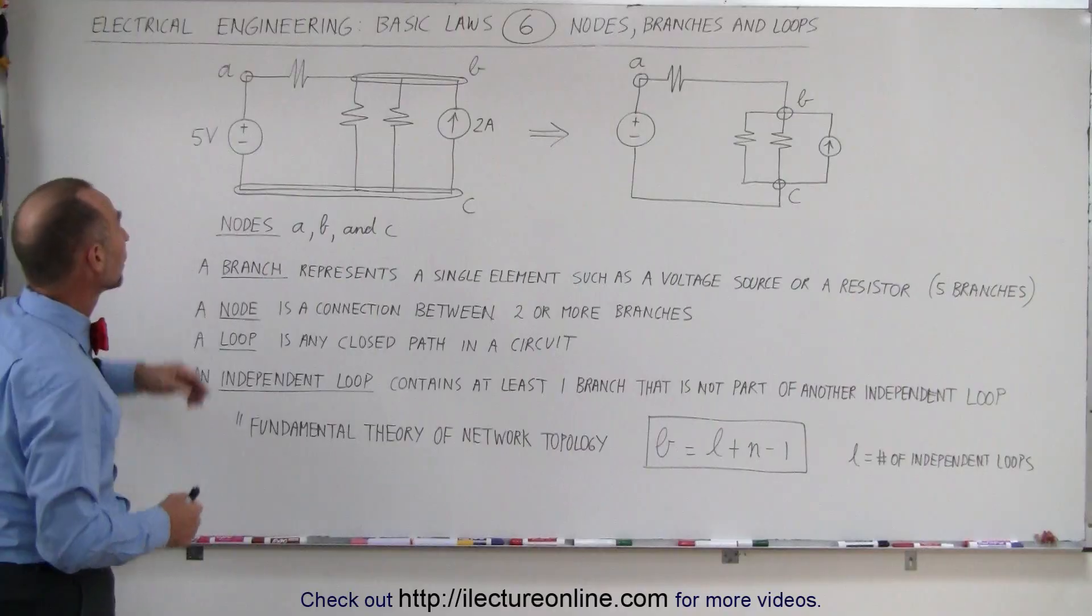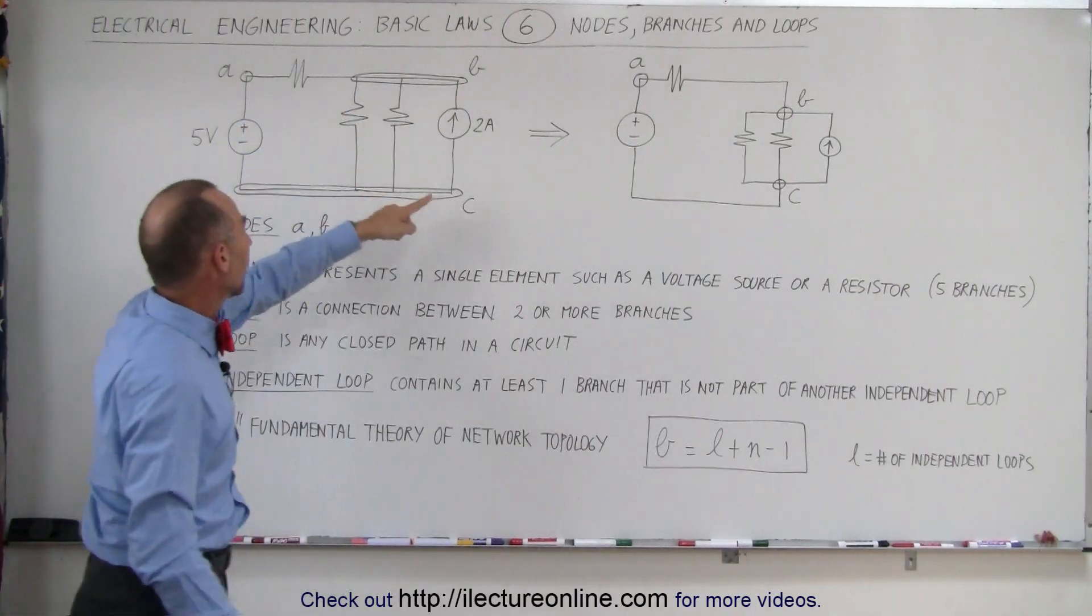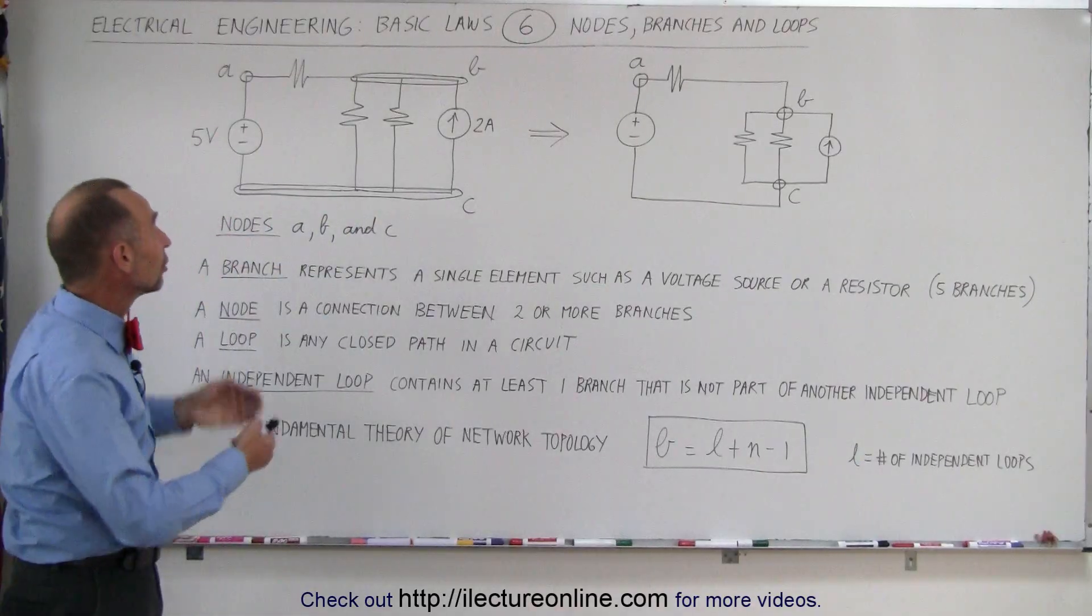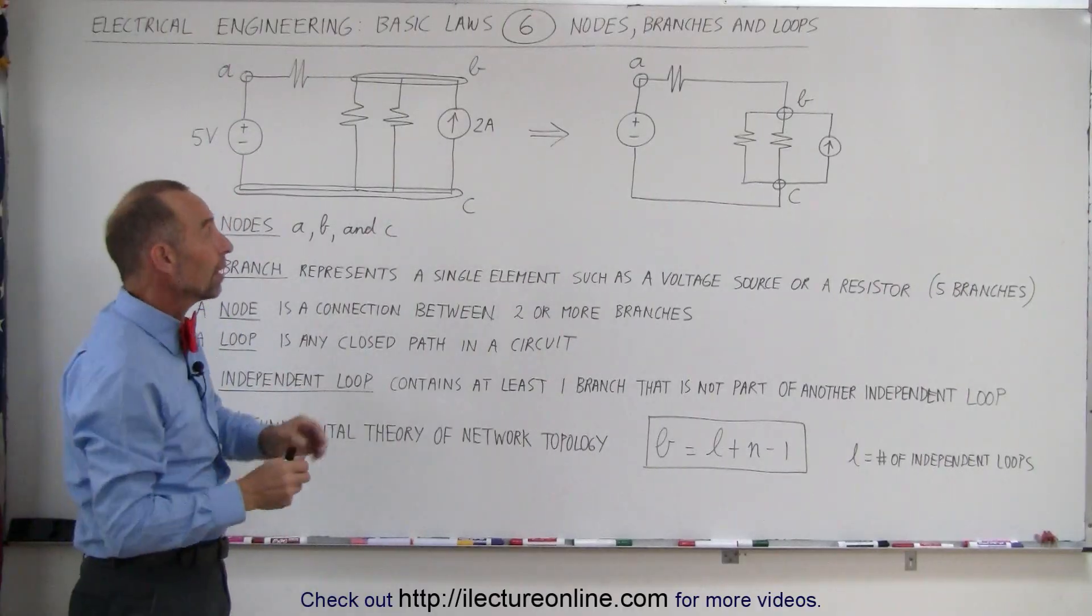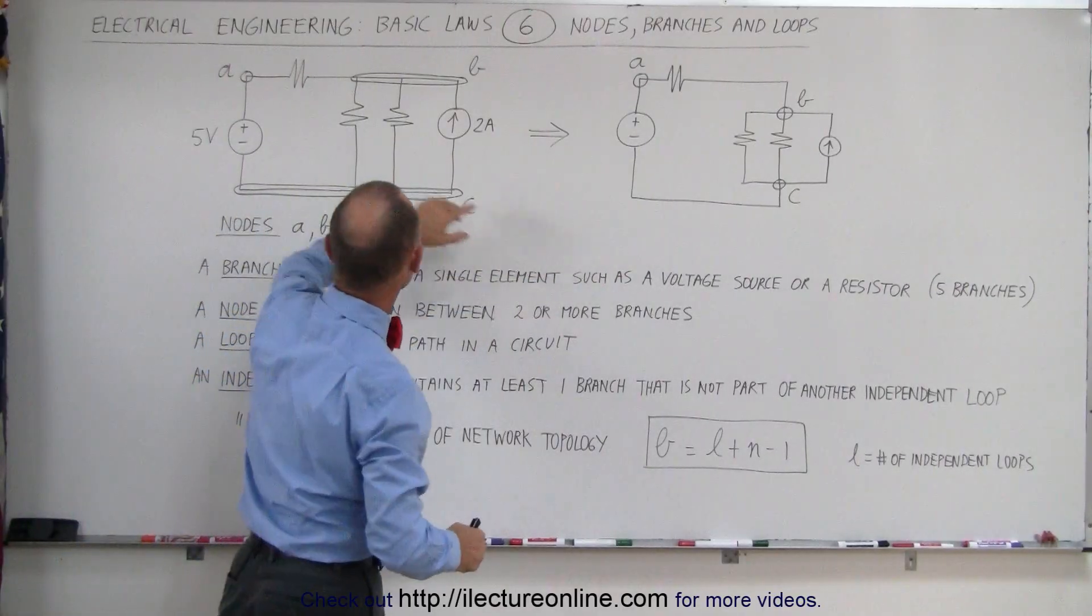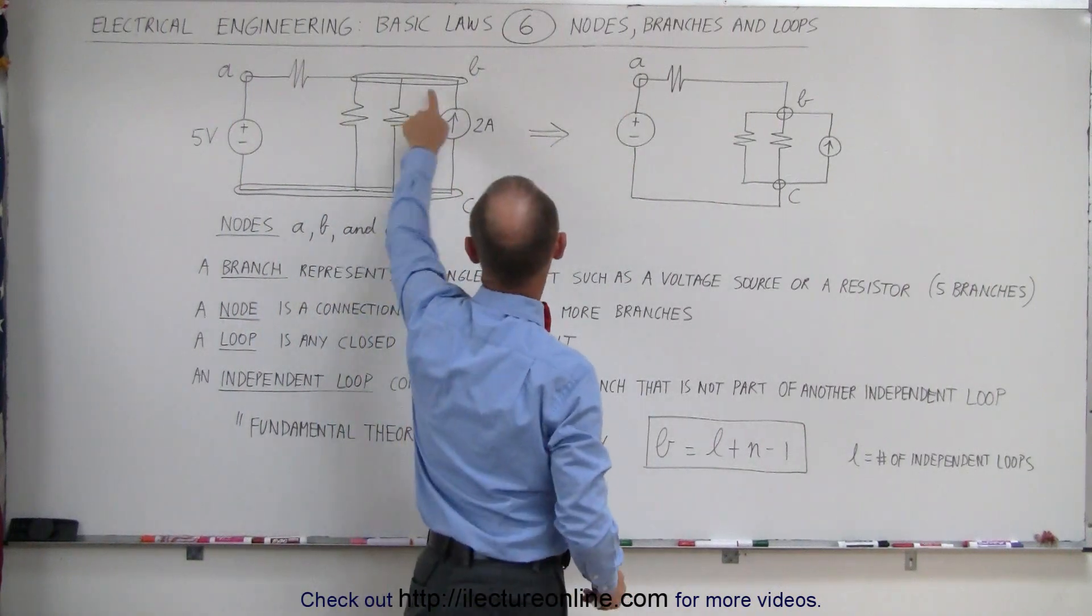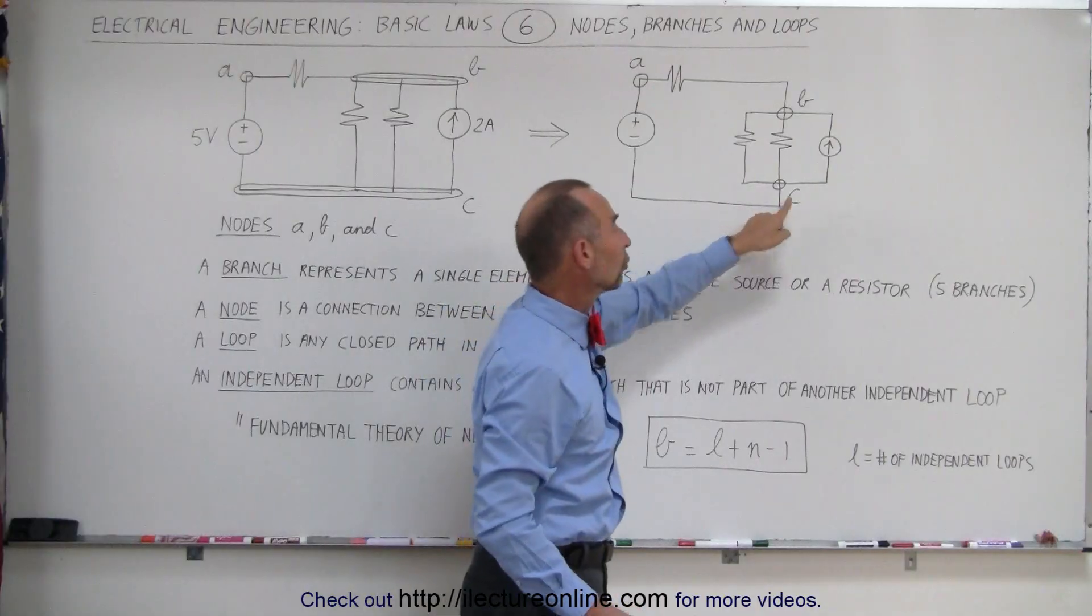Where are the nodes? Well we have one here at A, we have one here at B and we have one here at C. Sometimes it's a little troubling when you look at this and say this is a node, but if you redraw the circuit and make it look like this, you can then see simply that A is this node right here, B is this node right here and C is this node right there.